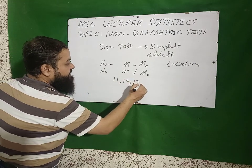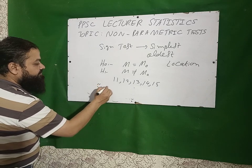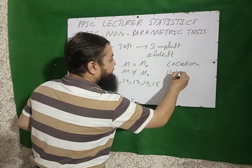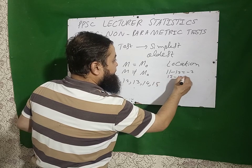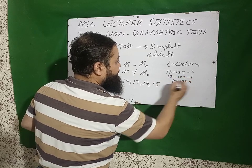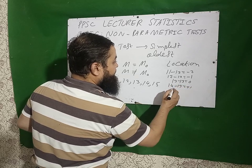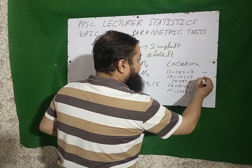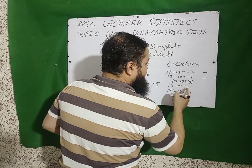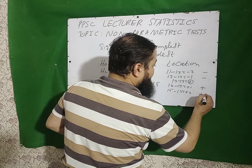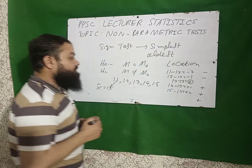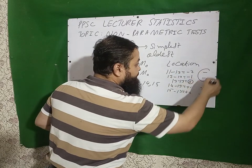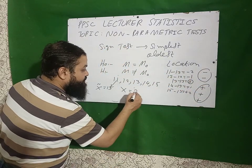For example, if we have values 11, 12, 13, 14, 15, the median is 13. We take the difference of every value from the median: 11 − 13 = −2, 12 − 13 = −1, 13 − 13 = 0, 14 − 13 = +1, 15 − 13 = +2. Zero is discarded. For negative differences we allot a minus sign; for positive differences we allot a plus sign. The test statistic x is the less frequent sign count — here minus appears 2 times and plus appears 3 times, so x = 2.